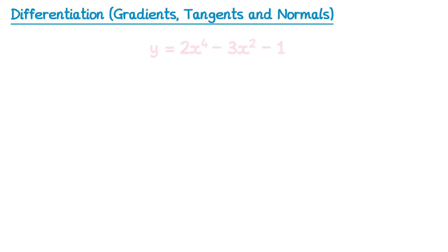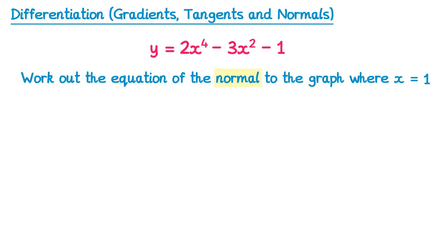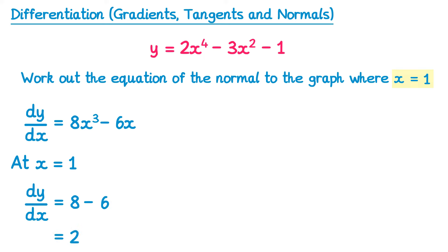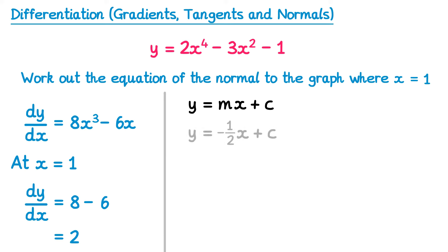Let's find the equation of the normal to a graph at the point where x equals 1. We start by finding dy by dx: 2x to the 4 differentiates to 8x cubed, negative 3x squared differentiates to negative 6x, and the constant gives 0. At x equals 1: dy by dx equals 8 times 1 cubed minus 6 times 1, which gives 8 minus 6 equals 2. This is the gradient of the tangent. For the normal, we take the negative reciprocal, giving gradient negative one half.